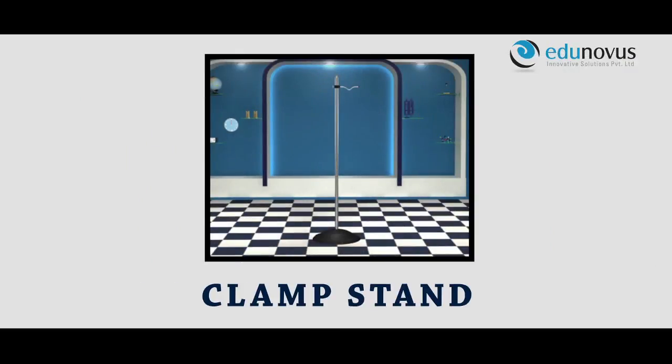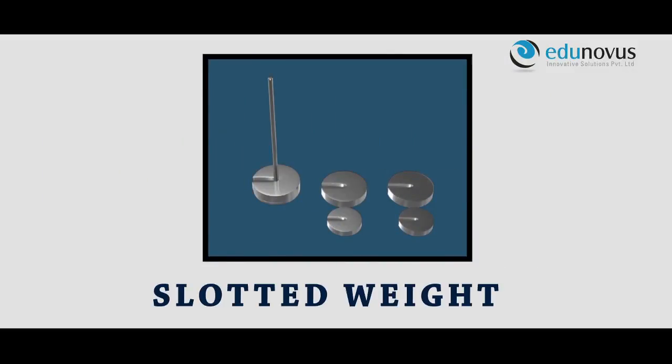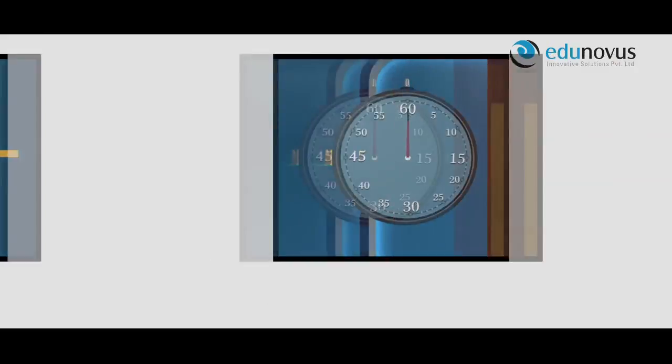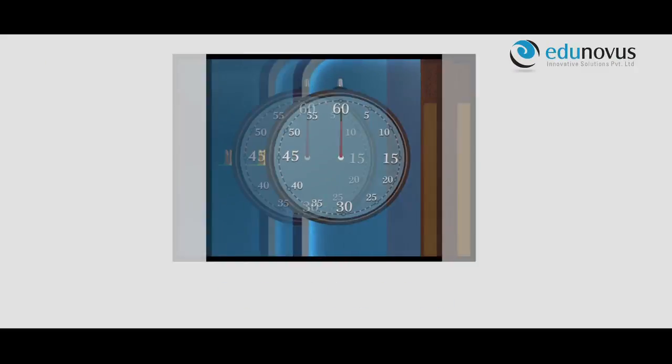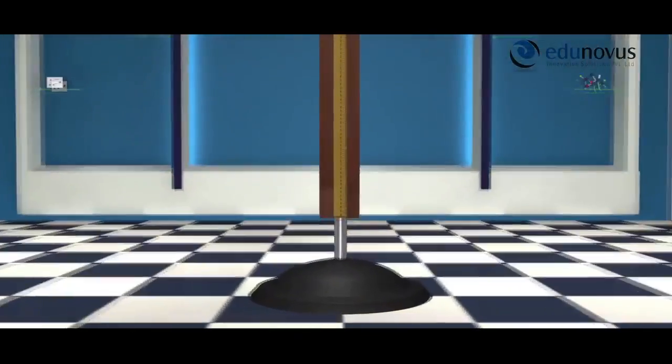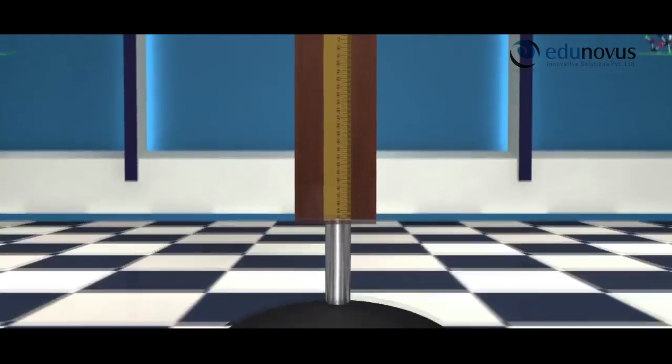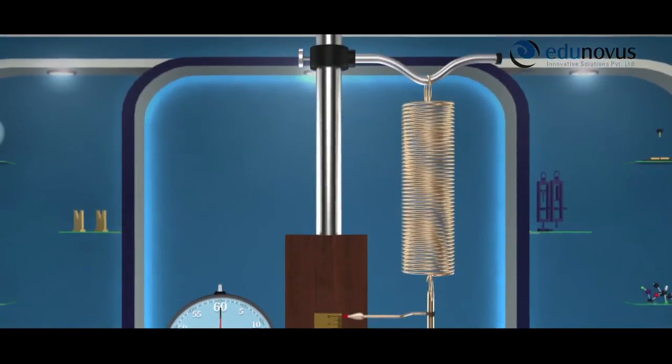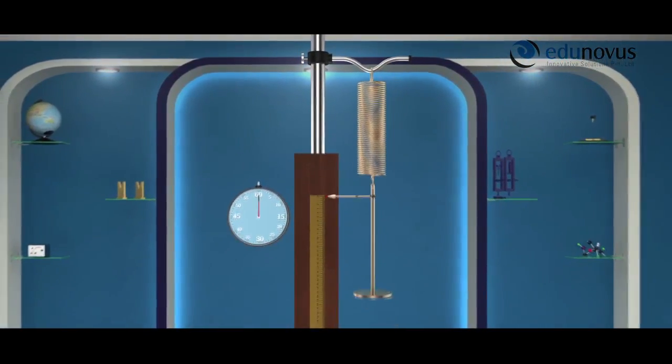clamp stand, slotted weights, meter scale, and stopwatch. Suspend the helical spring from a rigid support and adjust the scale such that the zero of the scale coincides with the pointer of the spring.